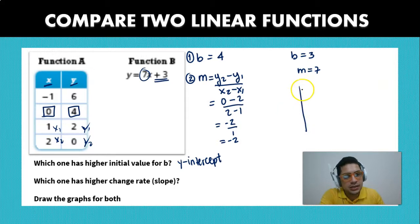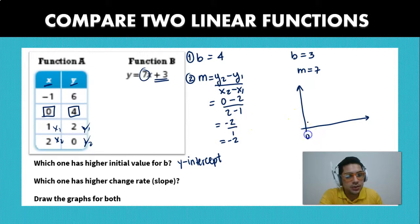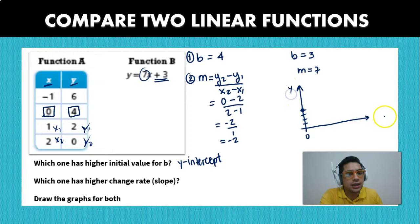So for function A, we just have to see the points that they give to us. So they give to us point 0 comma 4, right? So 0, 1, 2, 3, 4, which we know is going to be our value for the y-intercept, right? So y and x, and it's going to be 4.